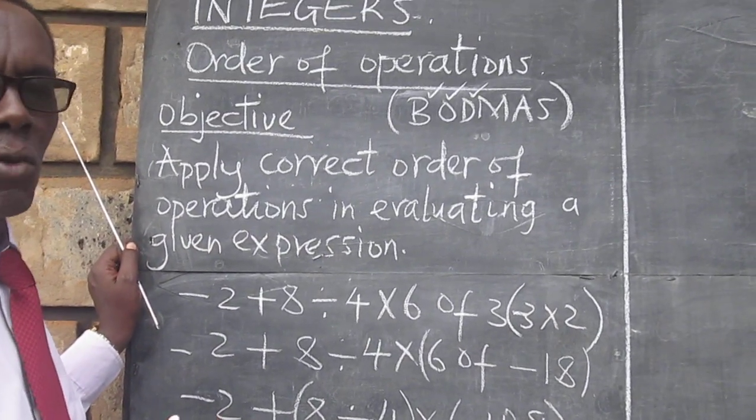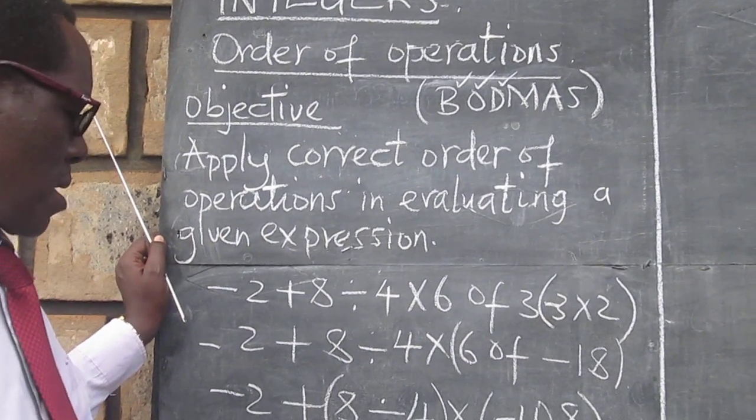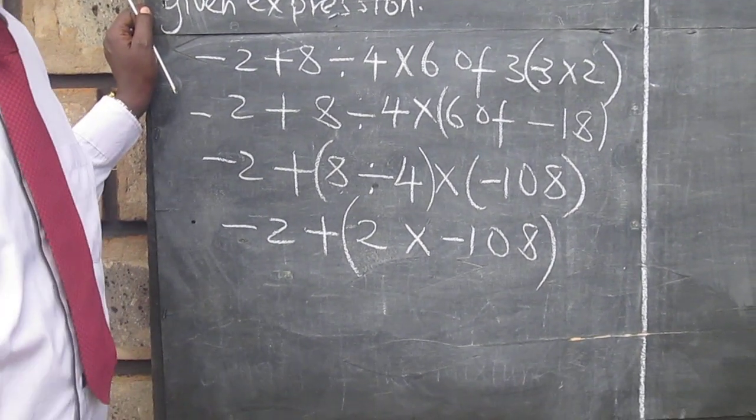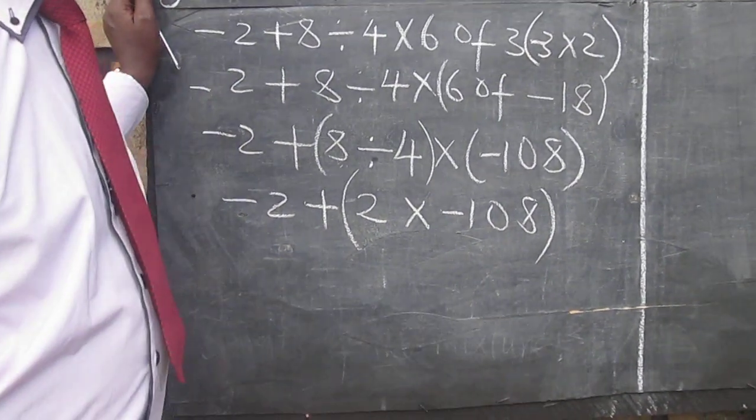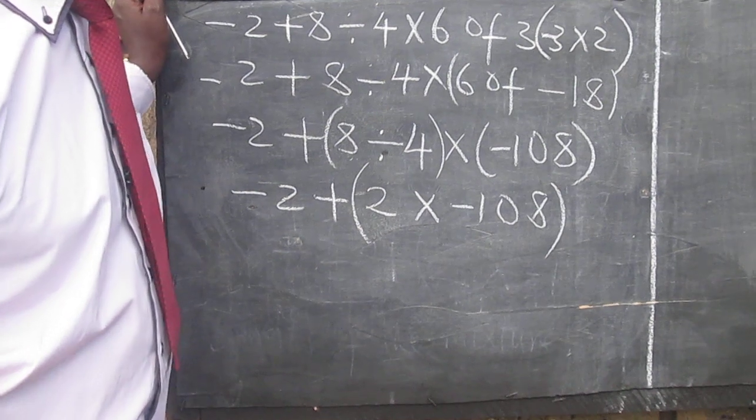So we now look at the situation where there is the multiplication sign. And the multiplication sign appears there. And we multiply that out. And the 2 times negative 108 gives us negative 216.